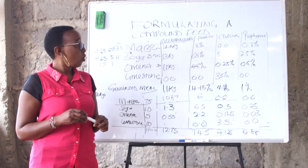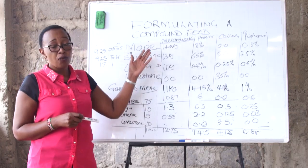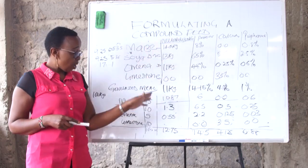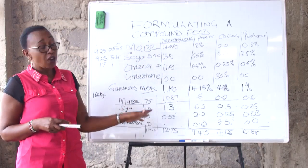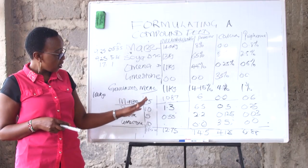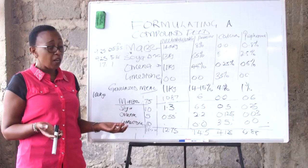That is the way you can formulate your simple feed in your house. Once you have been able to identify what you require, you need to mill your products: the maize, soya, omena—if you have them ready.